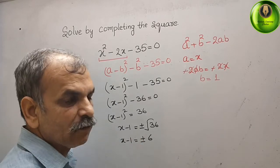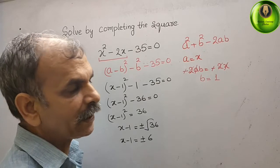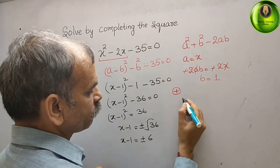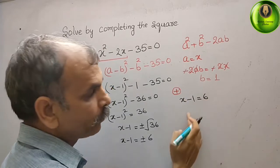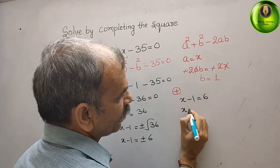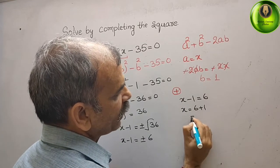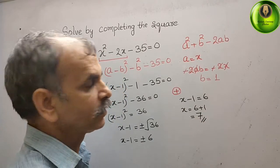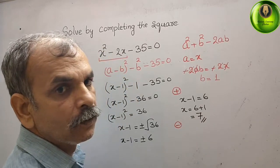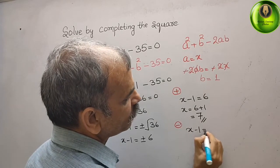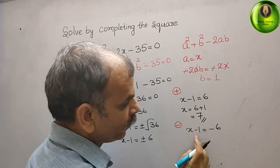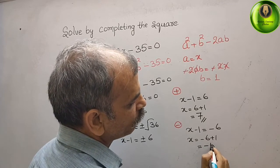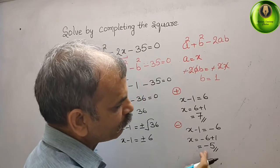So here are the two cases. One is plus, another is minus. We will take separately. First is plus, what we will get? x minus 1 is equal to 6. Bring this minus to this side, we will get plus. x is equal to 6 plus 1, that is equal to 7. So, x is 7 now. Next, we will take minus. We will get x minus 1 is equal to minus 6. Bring again this to this side. We will get x is equal to minus 6 plus 1, that is equal to minus 5. So, now your solutions are minus 5 and 7.